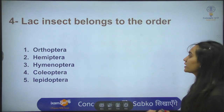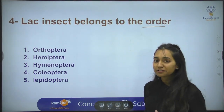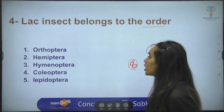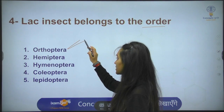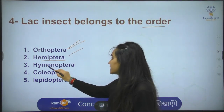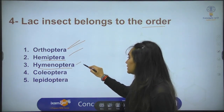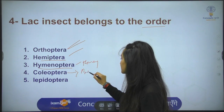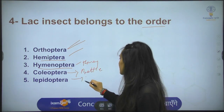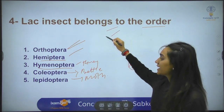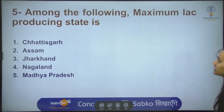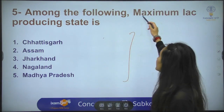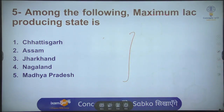Next question: the lac insect belongs to which order? In economic entomology there are 8 orders — Orthoptera has grasshoppers and cockroaches, Hemiptera has bugs, Hymenoptera has honeybees, Coleoptera has beetles and weevils, Lepidoptera has moths and butterflies. Tell us which order the lac insect belongs to. Also, which state is leading in lac production?